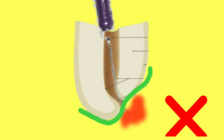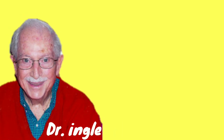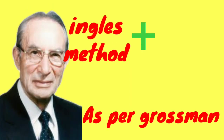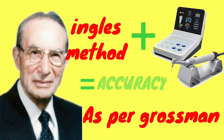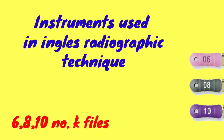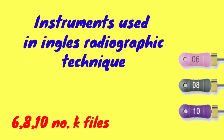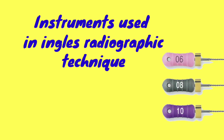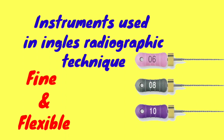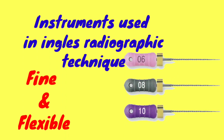Ingalls radiographic technique is most reliable and functionally feasible in day-to-day practice. As per Grossman, when used in combination with an electronic apex locator, the findings are very accurate. The instruments used in the Ingalls radiographic technique are K files of sizes 6, 8, and 10, which are fine and flexible enough to be inserted into the root canal and negotiate curved canals.